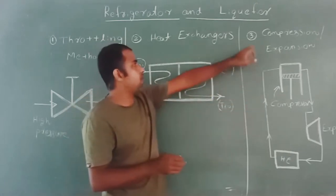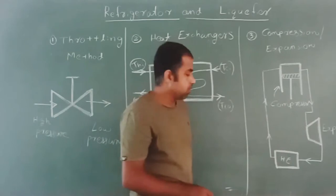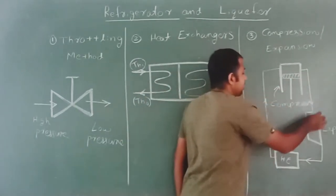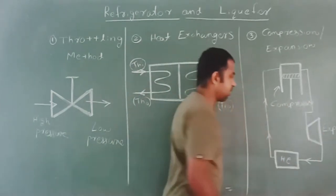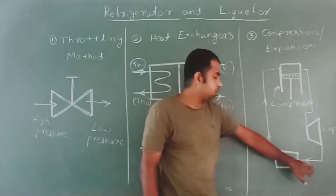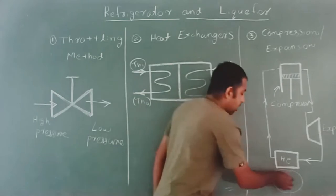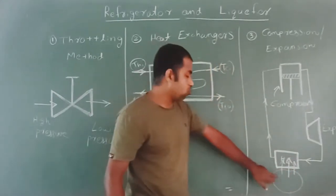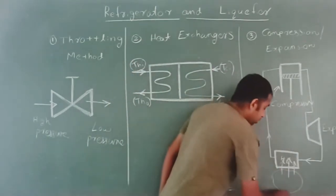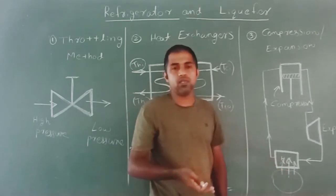Finally, one more method is the compression and expansion method. In this case, we are using a compressor, an expansion device, and a heat exchanger — in this case, an evaporator. The medium that is compressed is entering into the expansion device, and after the expansion, this medium becomes low temperature and liquid state. The low temperature liquid state medium passes through the heat exchanger. The heat available in the outside environment is absorbed by the medium, and while absorbing heat energy from the outside, the medium in the liquid state is converted to vapor state, cooling this region. Especially in the vapor compression cycle, we follow this particular method.